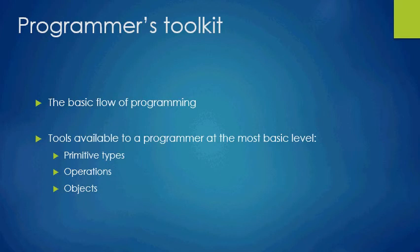The tools available at the most basic level to a programmer are primitive types — your ints, booleans, doubles, longs, and floats — your operations like adding, subtracting, and assigning, and objects. Objects are just a way to summarize a bunch of operations; an object is a thing that holds a bunch of data and remembers how to do any set of operations more complex than simple addition.